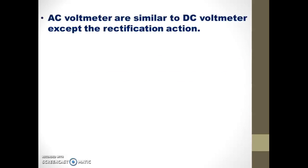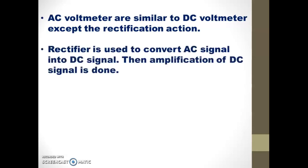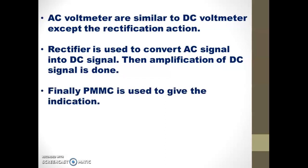In the previous video, we have seen DC voltmeter. AC voltmeters are similar to DC voltmeters, except AC voltmeters have a rectification action. The rectifier is used to convert the AC signal into a DC signal. After the rectification, it requires amplification of the DC signal, and finally the amplified signal goes to the PMMC to give indication.